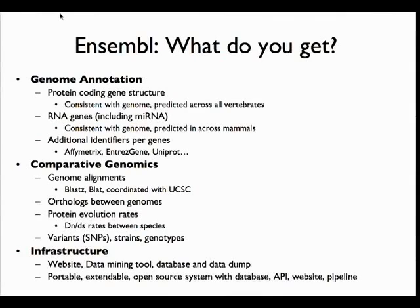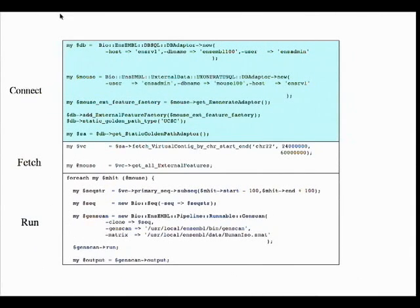The other thing we do is comparative genomics. We have a pile of different genomes and can calculate the relationships between those — look at the rates of evolution between the genes and other parts of the genome. We can also add information such as the variation within a genome. There's one human genome, but there are six billion of you, all with individual variations. There are population structures of those that can be related to disease, so it's interesting to store that information. And for all this, it's infrastructure — organizing this data into a way where other people can get access to it, via the website, via an API, via an open source environment.